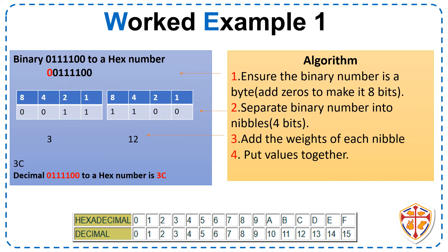Step 4. Put values together. 3 and 12. 12 as a hex is the letter C. So our answer is 3C. The decimal 0111100 to a hex number is 3C.